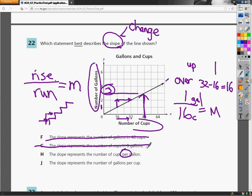But in this case, that per means divide and it shows cups per gallon. Well, that looks pretty good, except for the fact that in our slope here, gallons are on top and cups are on the bottom. So H is out.